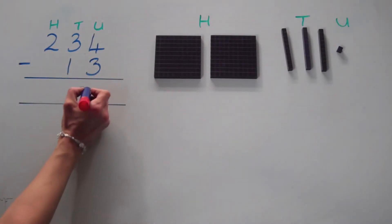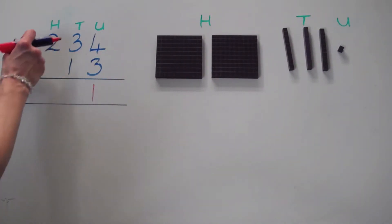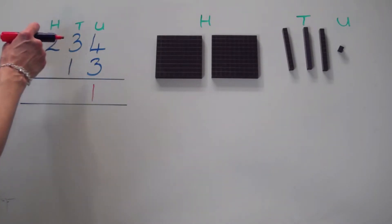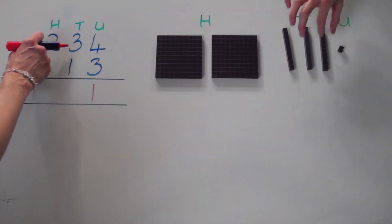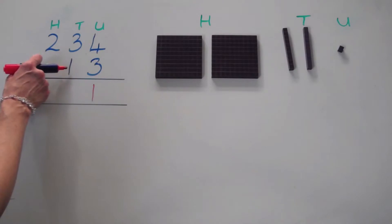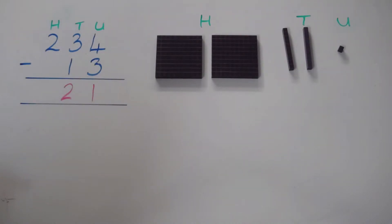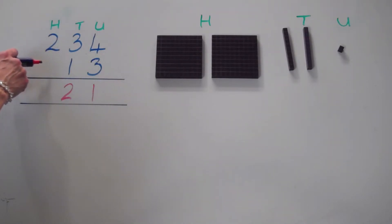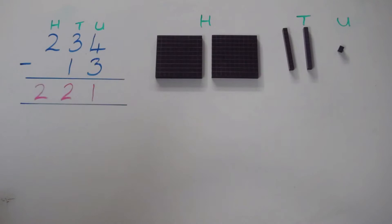Now let's move on to the tens column. We have three tens and we need to take away one ten, so three tens take away one ten leaves us with two tens, or twenty. In the hundreds column we have two hundreds but no hundreds to take away — two take away no hundreds leaves us with two hundreds. That gives us an answer of two hundred and twenty-one.